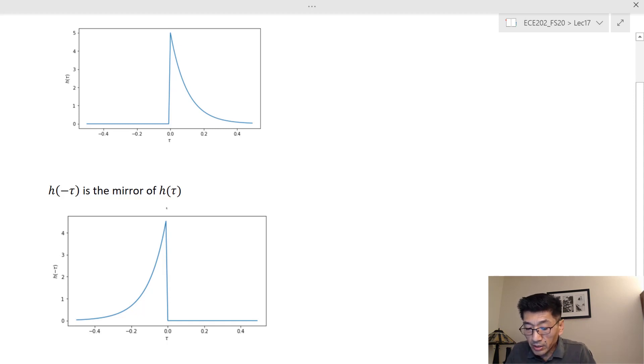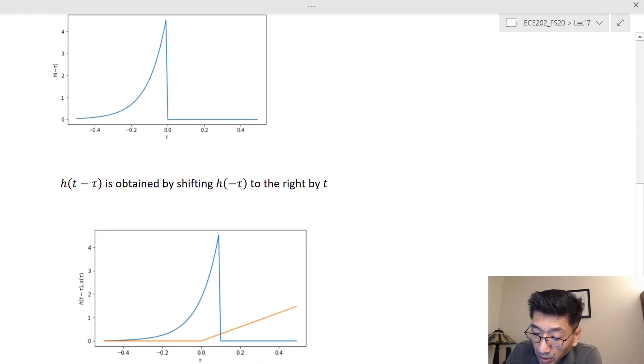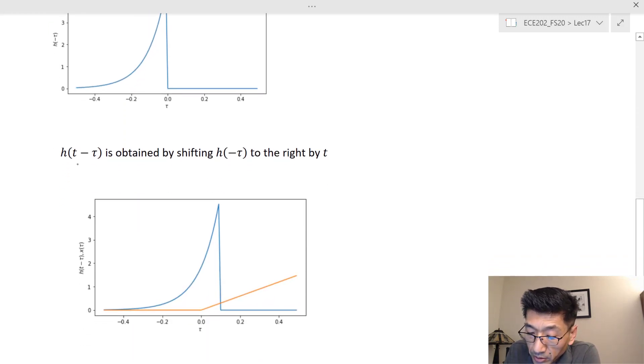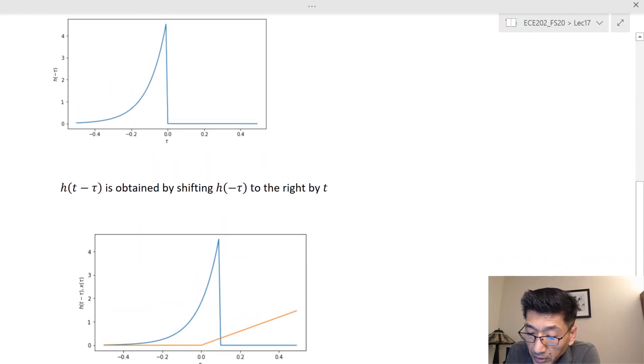And h(t minus tau) is just shifting the h minus tau to the right by the time t. So here this is h(t minus tau).